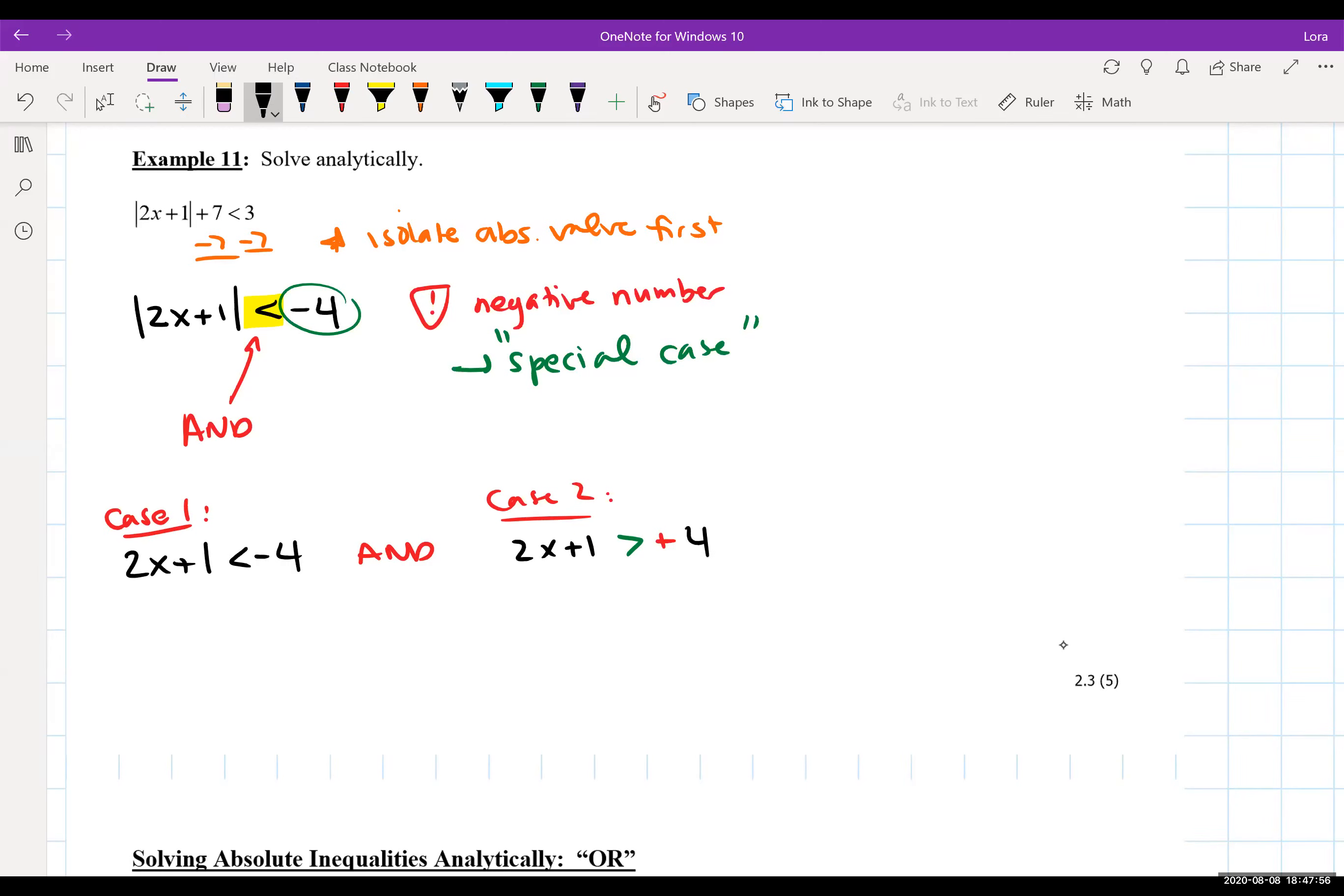You can solve these as is, no problem. We're going to subtract one from each side, we have 2x less than negative five, divide both sides by two, we get x is less than negative five halves.